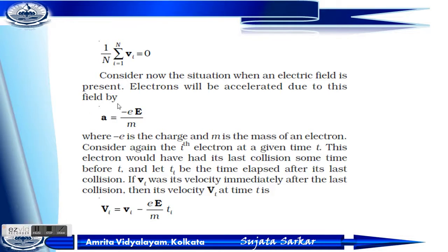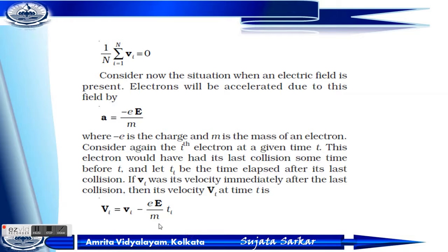Now, let ti be the time elapsed after the last collision. Here, small vi is the velocity immediately after the last collision, and capital Vi is the velocity at time t. So we can write: Vi = vi − (eE/m) × ti, because velocity equals initial velocity plus acceleration times time.